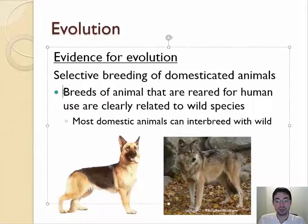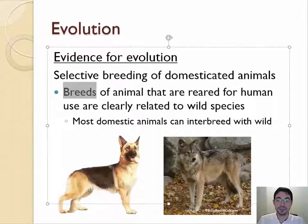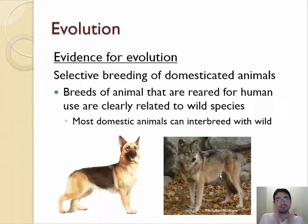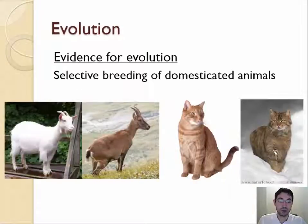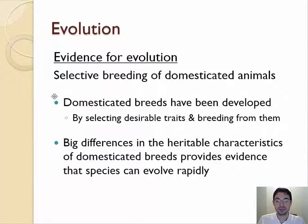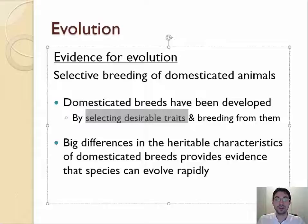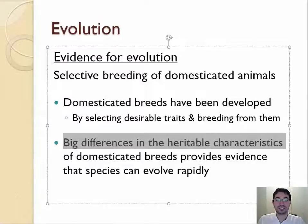The process is artificial selection — humans were the selection, and this is through selective breeding. A breed is a type of domesticated animal, like a breed of dog: Chihuahua vs. Great Dane vs. German Shepherd. Breeds of animals were made for human use. They're clearly related to wild animals — most domestic animals can still interbreed with wild ones. There are dogs and wolves, cats and wild cats, goats and mountain goats. The domesticated breeds were developed by selecting the traits we liked, not the traits advantageous in nature, but the traits that we humans liked and bred from them, leading to big differences in heritable characteristics over time.